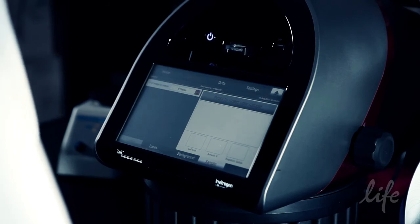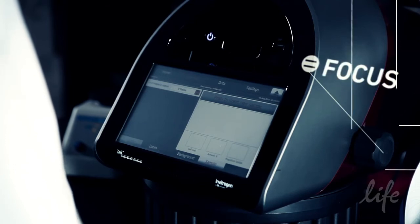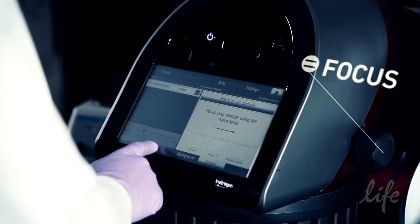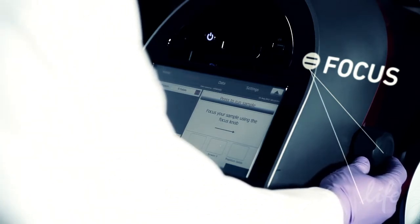Your sample will be drawn into the instrument and you'll be shown a live view of your cells. When prompted, focus the cells using the image adjustment knob on the right side of the instrument. Correctly focused images have uniformly dark colored cells surrounded by bright halos.